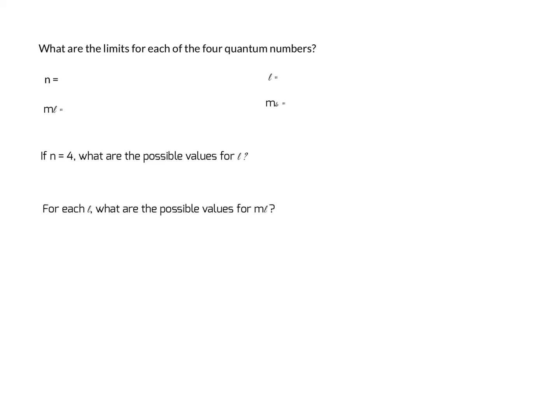In this question, we're looking at the four quantum numbers that define a space an electron can occupy about an atom. The first one, n, is the principal quantum number. It can have values starting at 1 and go upward by integers to 2, 3, 4, 5, as high as you need to.